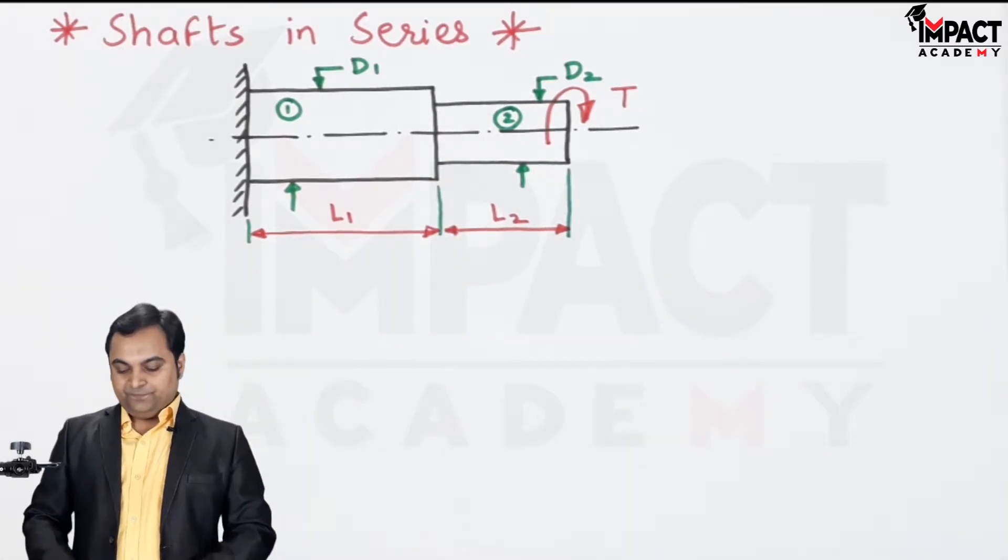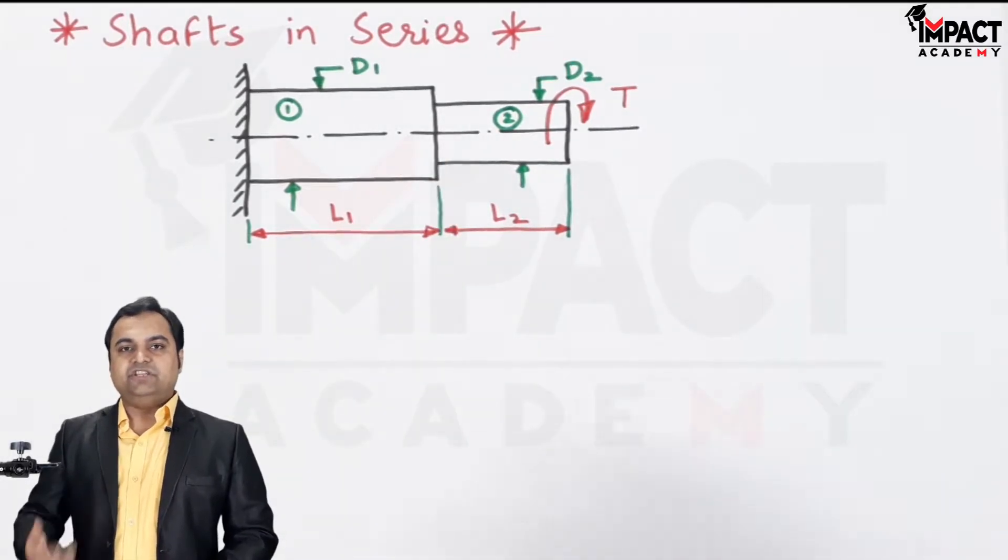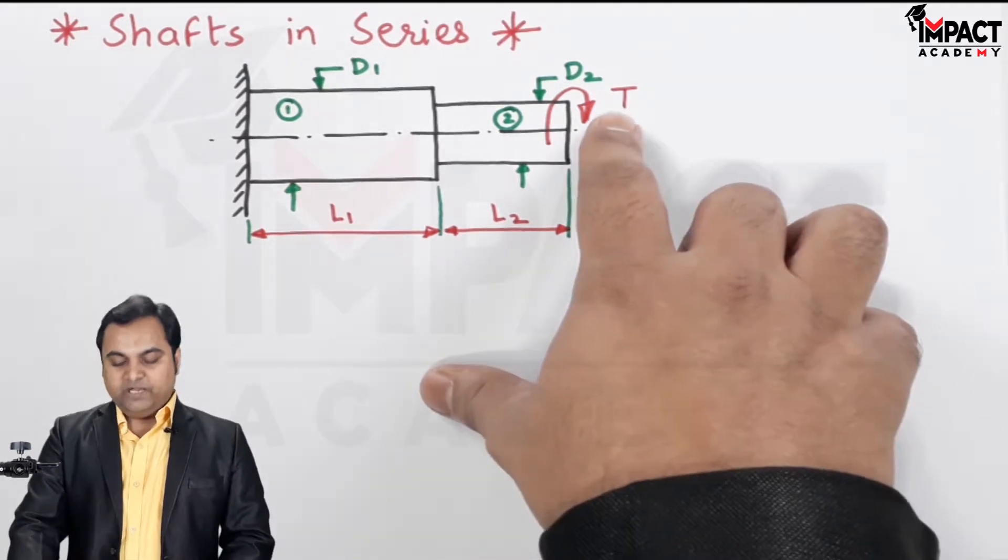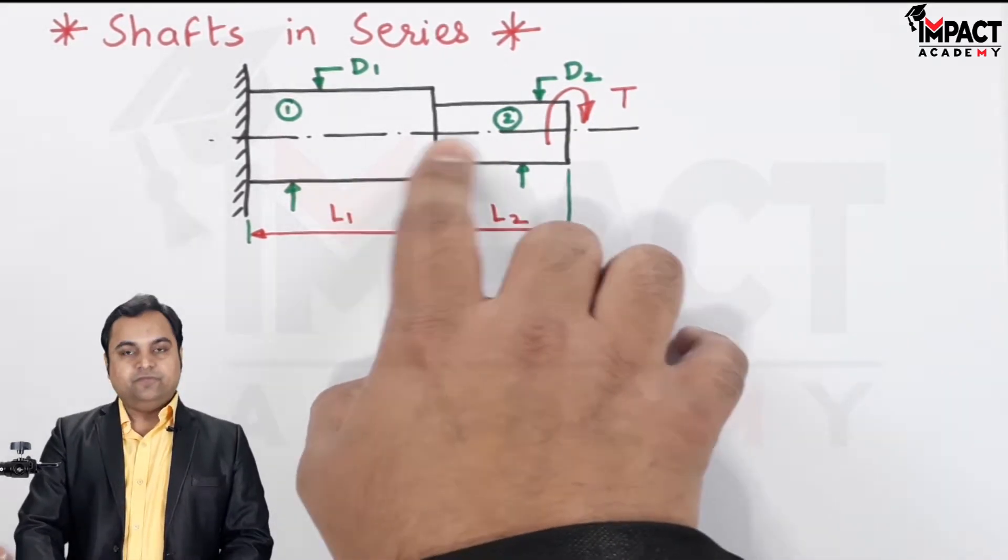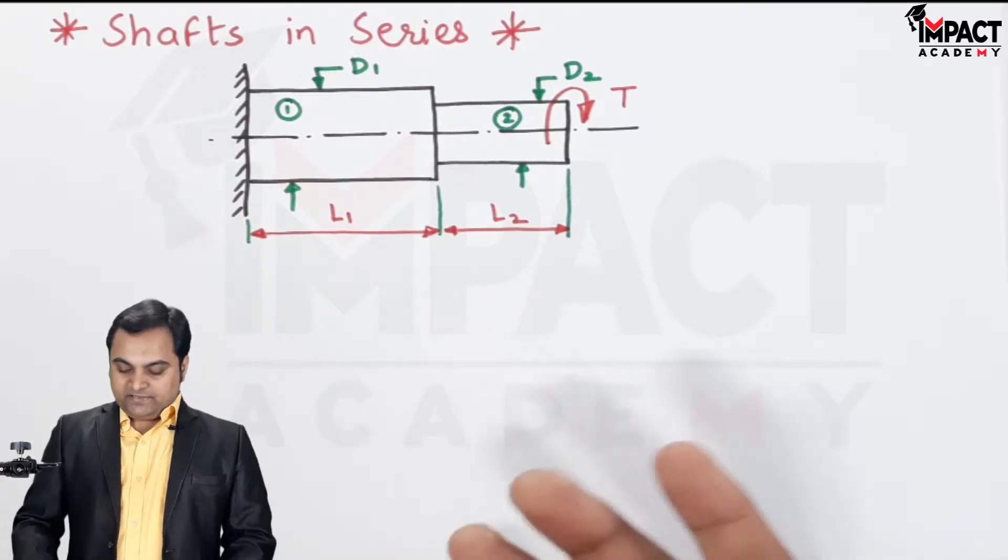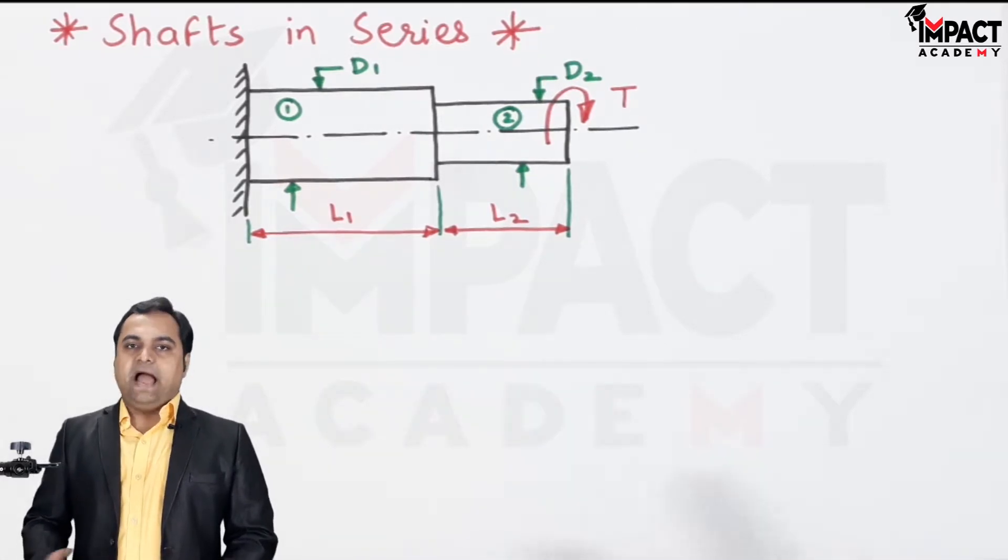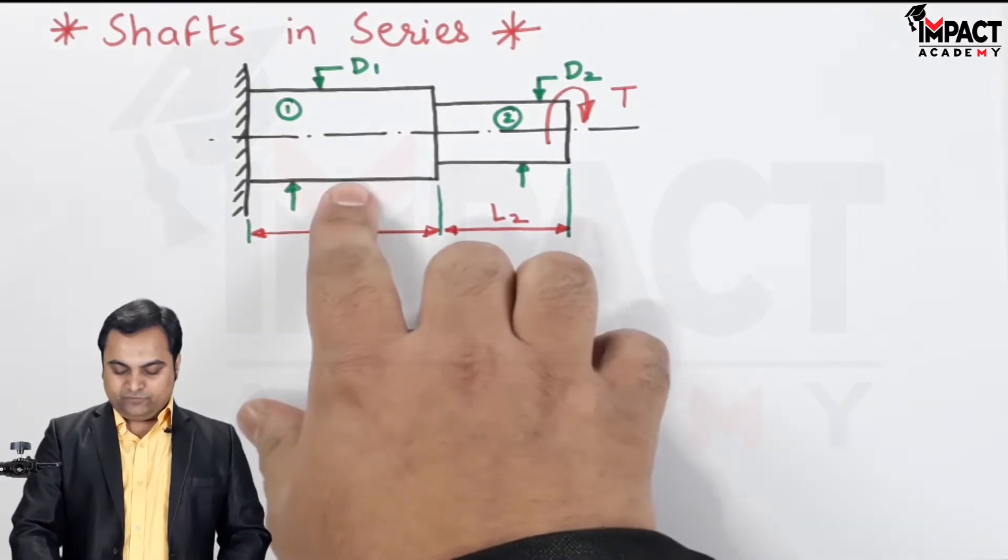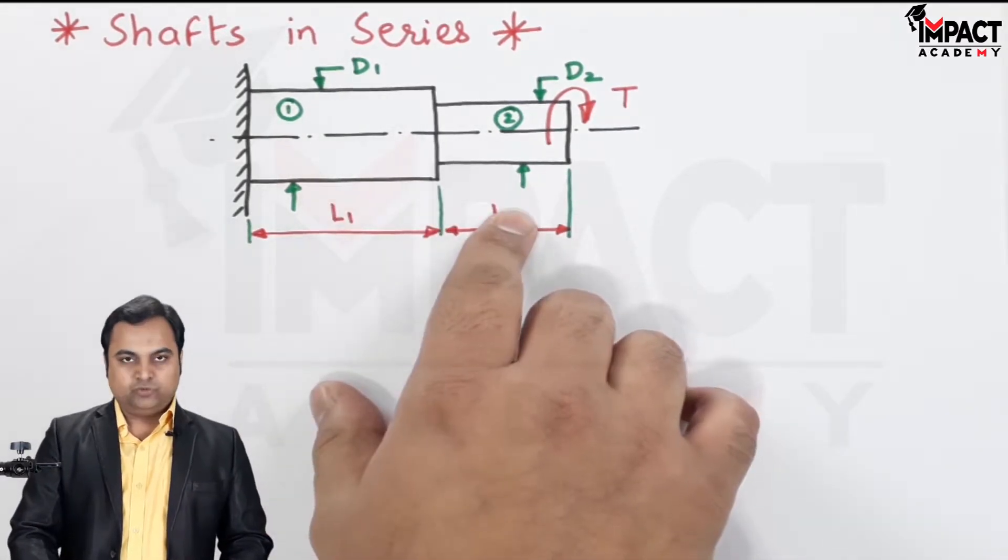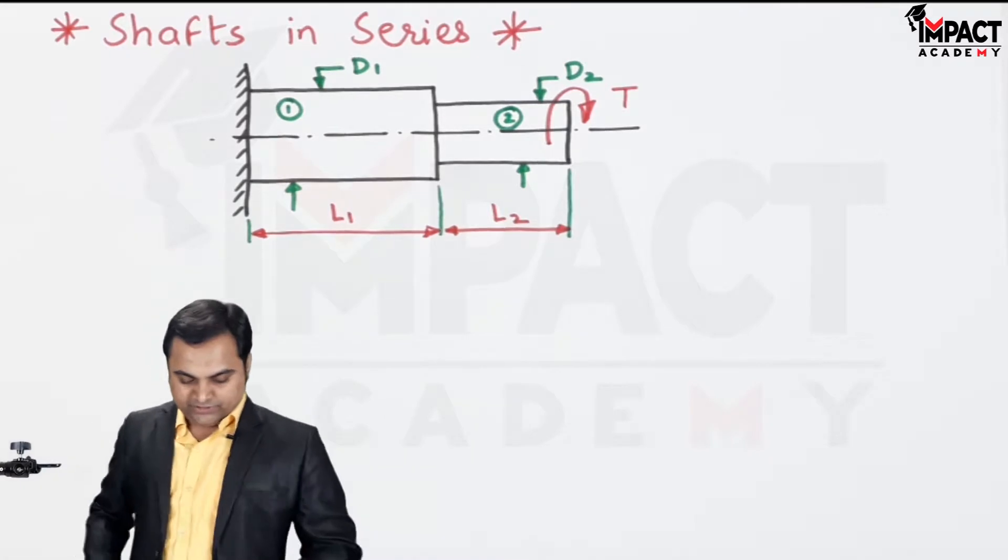For example, here I have taken two shafts. Even if it would have been three shafts, then also the applied torque remains constant for those shafts. And then the angle of twist would be added—that is, angle of twist would be addition of angle of twist for shaft one and for shaft two. I'll write down the conditions over here.